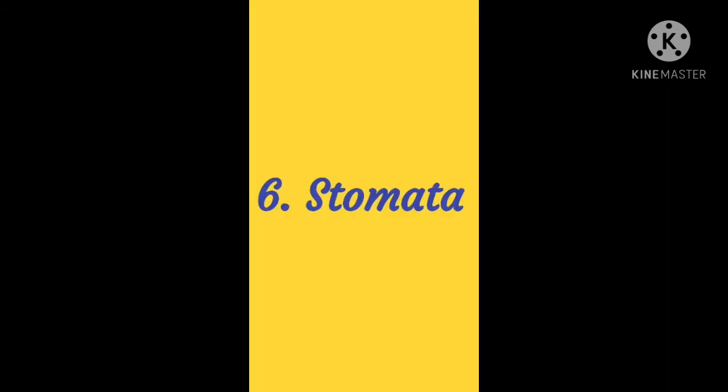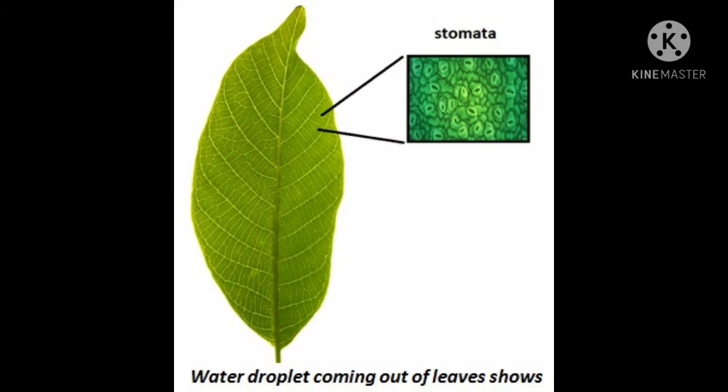Next one: stomata. Stomata are tiny openings or pores mostly found at the base of the leaves. Air enters the leaves through these openings. Stomata help the plants to breathe and are used to exchange gas.